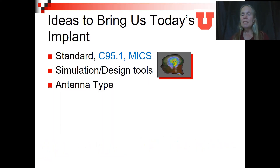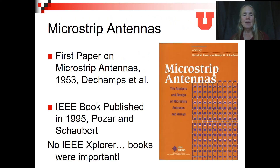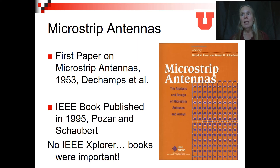With a standard and some simulation design tools, let's look next at antenna types. The first paper on microstrip antennas was seen in 1953. However, the book by Pozar and Schubert in 1995 had a huge impact on bioelectromagnetics. At that time there was no IEEE Xplore, there was no Google, and books were very important — they really did drive research areas. The microstrip antenna book led to a lot of ideas based on microstrip antennas for bioelectromagnetic devices.